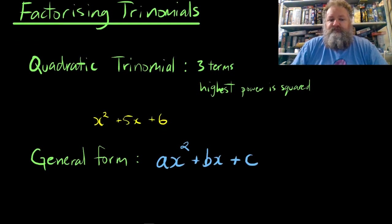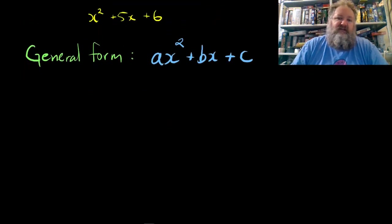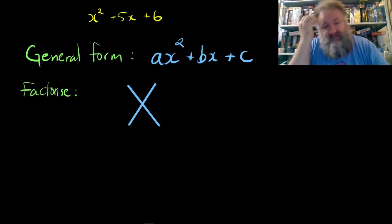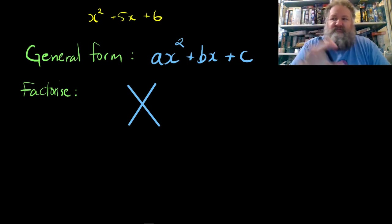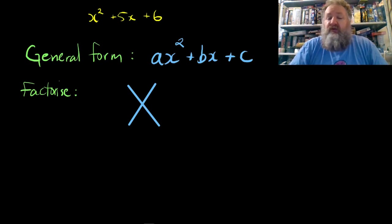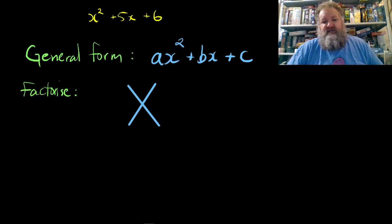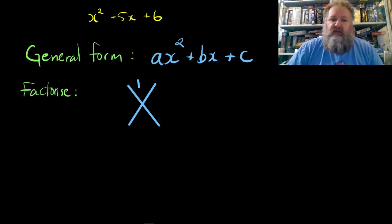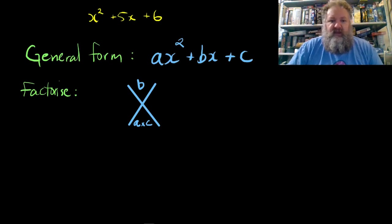Now let's talk about how to factorize using this general form. I recommend the Big X method — some call it the diamond method. It's really just a graphical organizer to structure your thinking. In the Big X, we write the value of b at the top and the value of a multiplied by c at the bottom.